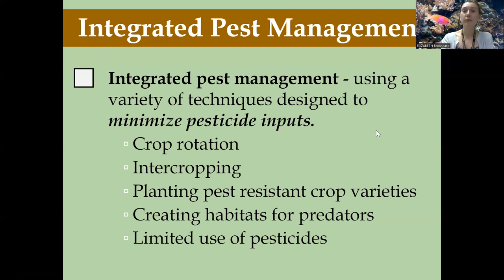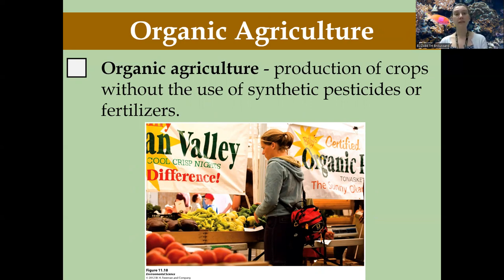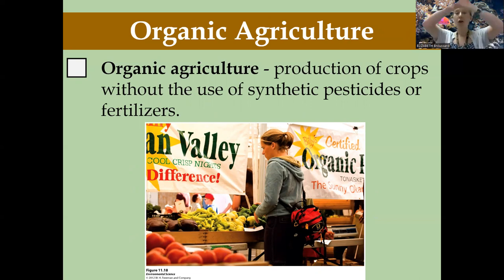Organic agriculture — the production of crops without the use of synthetic pesticides or fertilizers — is essentially a summary of everything we've talked about. Organic agriculture includes contour plowing, crop rotation, nomadic grazing, cage-free practices, and integrated pest management. All of that can be summarized under organic agriculture.